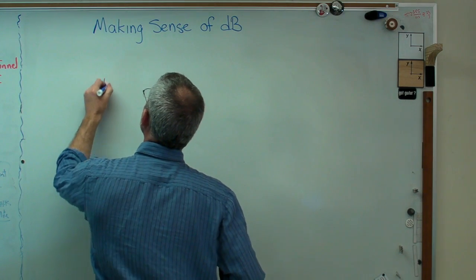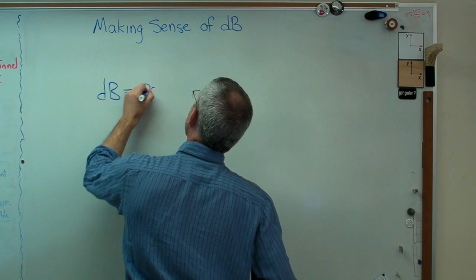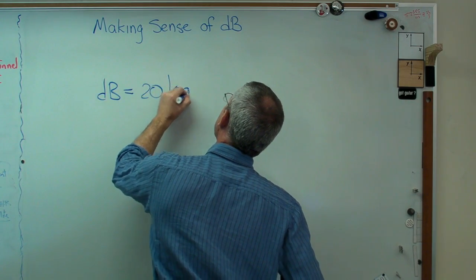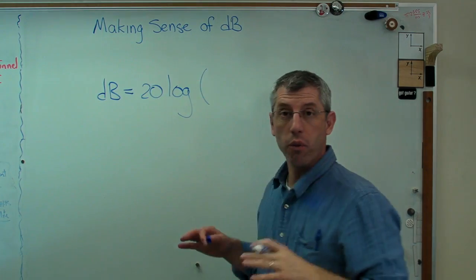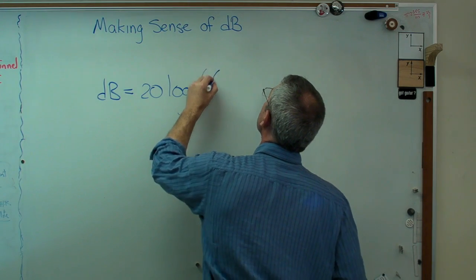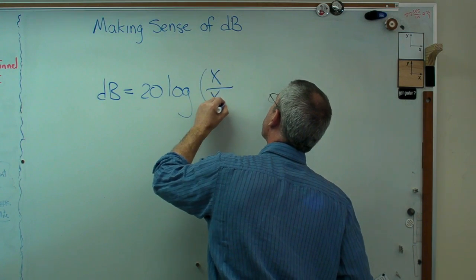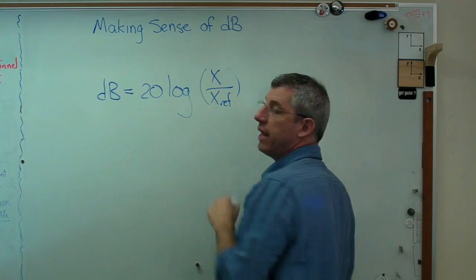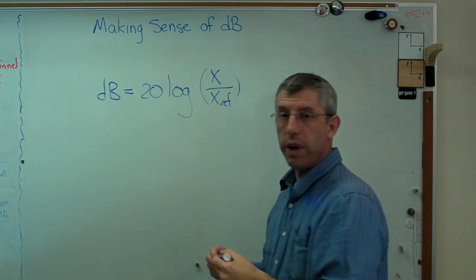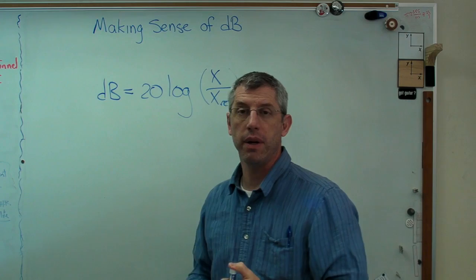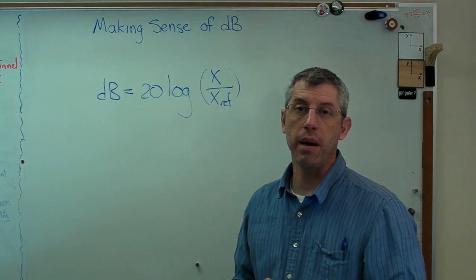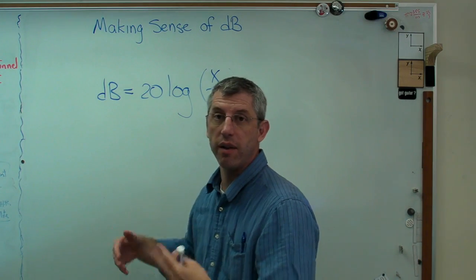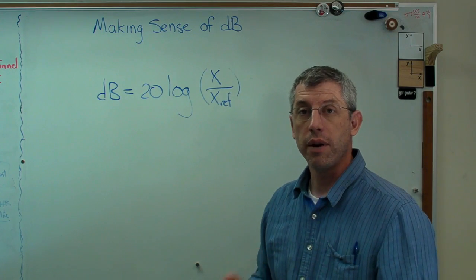dB is defined this way. It's 20, and this is a base 10 log, and it's a log of the ratio of two numbers, and I'll just call those x and x sub ref. That's a reference number is what that stands for. By the way, decibel, the name for that came out of Bell Laboratories, and decibel is one-tenth of the original definition of the bell.